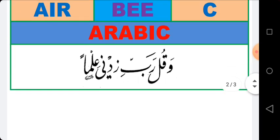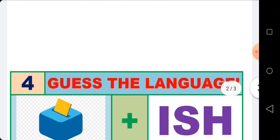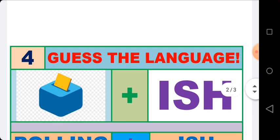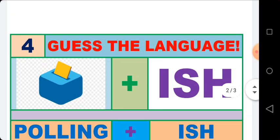Now we do activity number four. Time is over. I'll give you the hint. On the right side is the emoji of polling or voting, and on the right side three letters 'ish' — polling, ish.